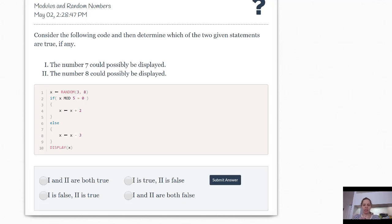Okay, first line of this code. X is set to a random number between 3 and 8. So X could be 3, could be 4, could be 5, could be 6, could be 7, could be 8.